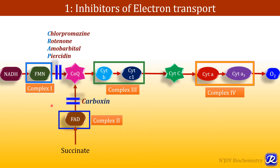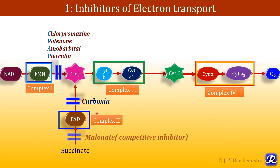The transport of electrons from complex II to coenzyme Q is inhibited by carboxin. Carboxin is the inhibitor which inhibits the flow of electrons from FAD to coenzyme Q. Malonate is a competitive inhibitor of succinate dehydrogenase.